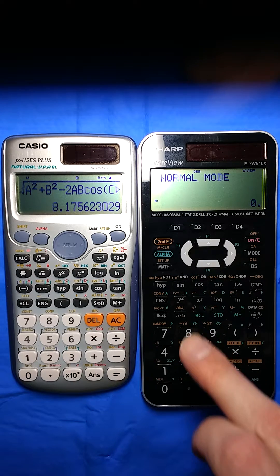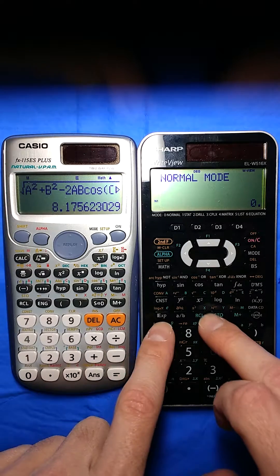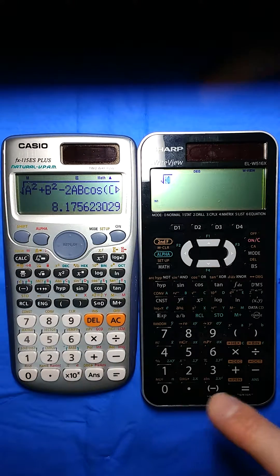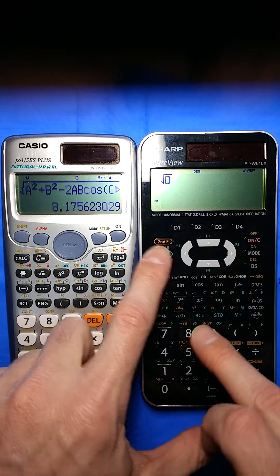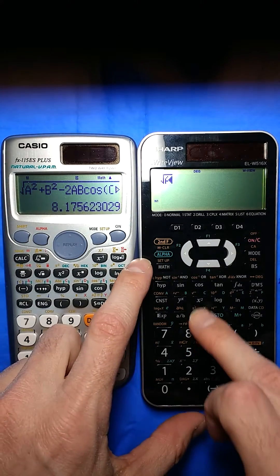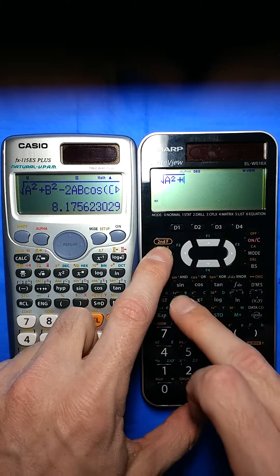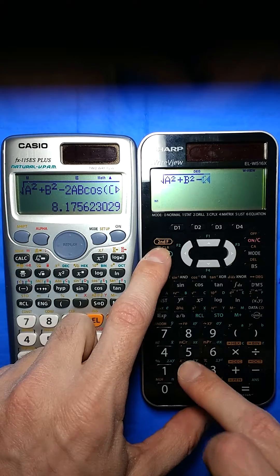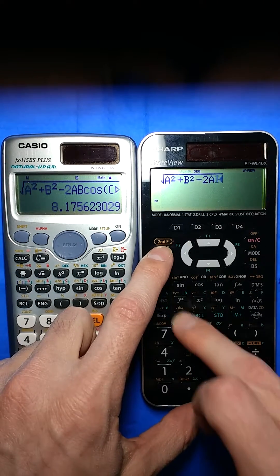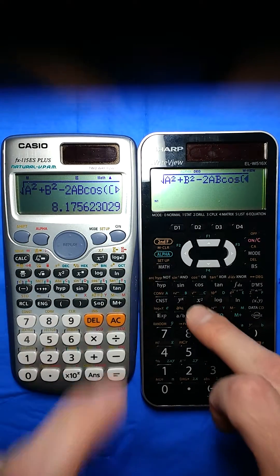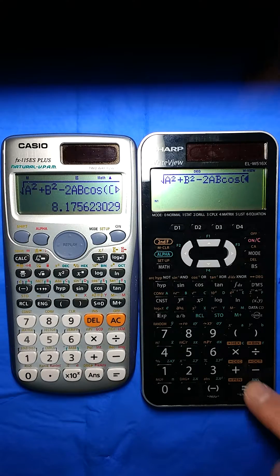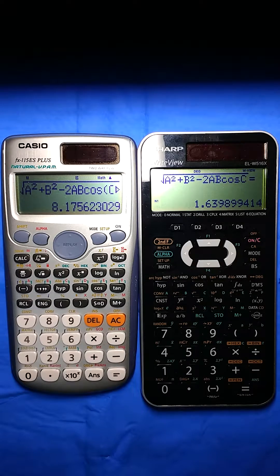And I'm going to do the same thing on the Sharp here. I'm not going to worry about putting the c equals, but we have a squared plus b squared minus 2ab cosine of c. It equals. Alright, it too has a value.